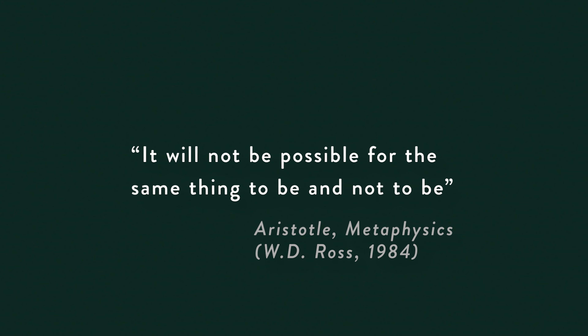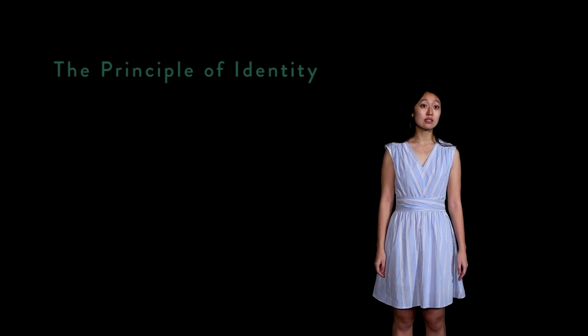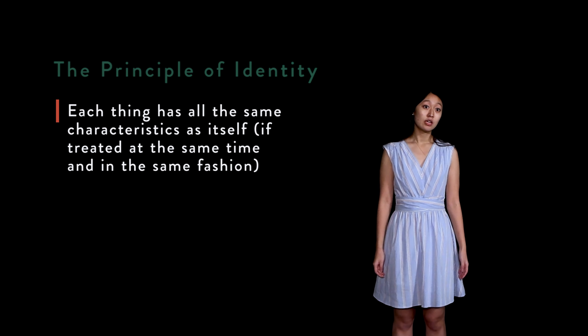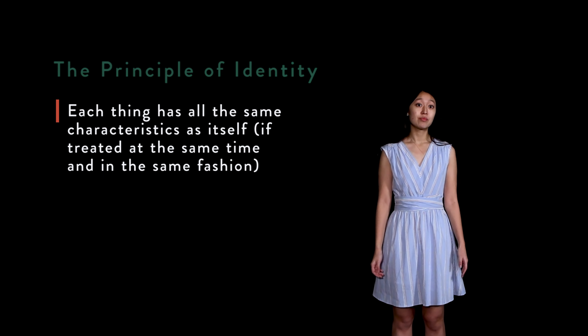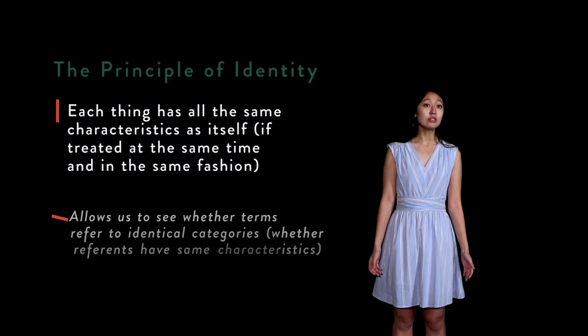It will not be possible for the same thing to be and not to be — not to be confused with Shakespeare's famous lines 'to be or not to be, that is the question.' Aristotle's statement here is known as the principle of identity. This principle tells us that each thing has all the same characteristics as itself, if treated at the same time and in the same fashion.